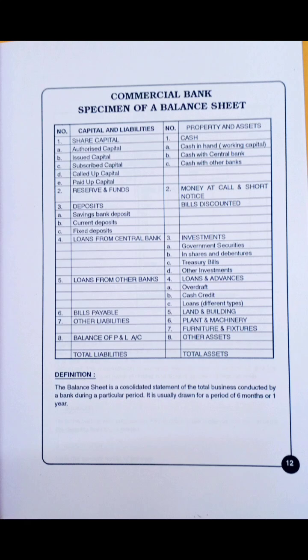Capital and liabilities come on the left-hand side, and properties and assets always come on the right-hand side. On the liabilities side: share capital — which includes authorized capital, issued capital, subscribed capital, called-up capital, paid-up capital — then reserves and funds, deposits, loans from the central bank, fixed deposits, and current deposits.